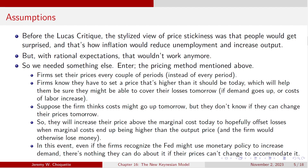Before the Lucas critique, the idea of price stickiness was that people would just get surprised by some kind of policy. Say the Federal Reserve would announce inflation at 2%, but then surprise everybody and inflate at 4%. That surprise would reduce unemployment and increase output. But with rational expectations, that didn't really work anymore. Under rational expectations, everybody says, the Fed says they're going to inflate at 2%, but we all know they want to inflate at 4%, therefore we expect them to inflate at 4%. And if the Fed can't surprise us, they can't have surprise monetary policy affecting output and unemployment.